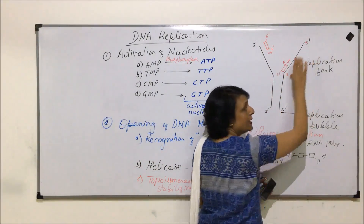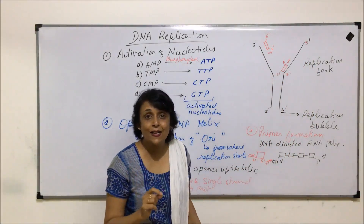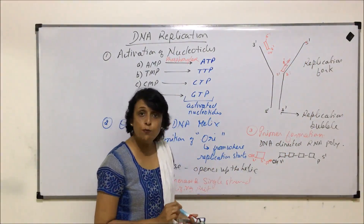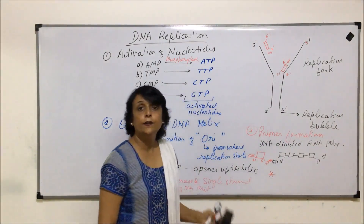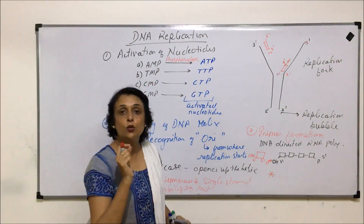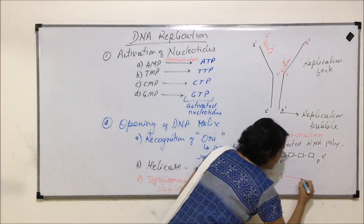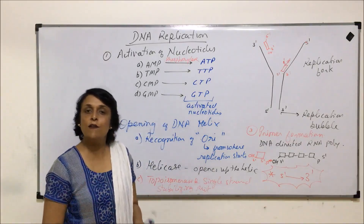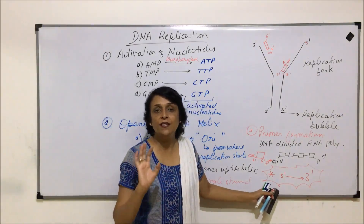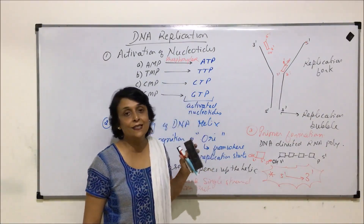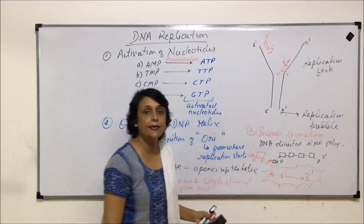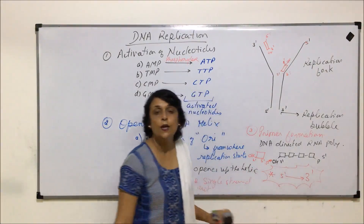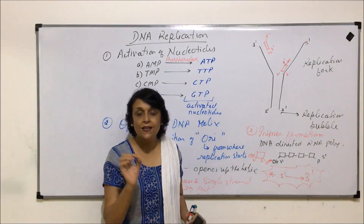One more important thing to remember: the new DNA strand always grows from 5 prime towards 3 prime. This is the most critical rule for DNA synthesis, and it applies to RNA as well. The simple reason is that at the 3 prime end there is a free OH functional group, so any new nucleotide can only come and bind at the 3 prime end. The DNA strand therefore always grows toward its 3 prime.